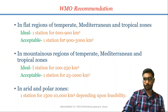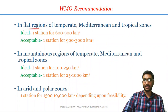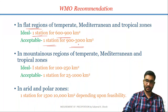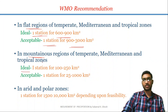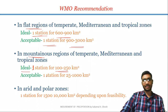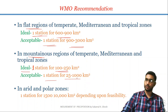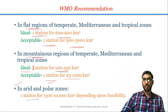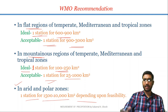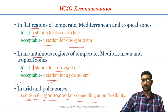According to WMO, in the flat region the ideal number is one station for 600 to 900 square kilometres, and the acceptable is one station for 900 to 3000 square kilometres. In mountainous region, the ideal is one station for 100 to 250 square kilometres, and the acceptable is one station for 25 to 1000 square kilometres. In arid zone or polar zone, one station for 1500 to 10,000 square kilometres depending upon the feasibility.